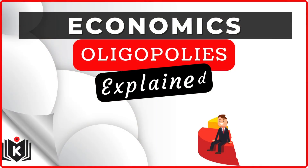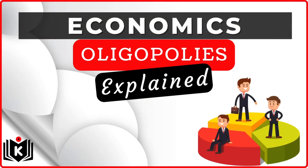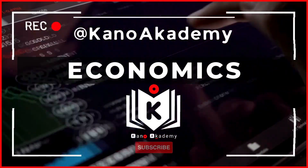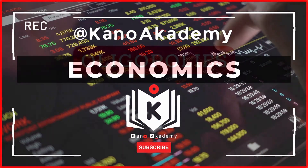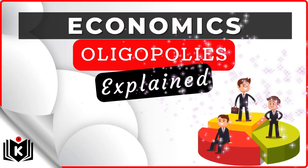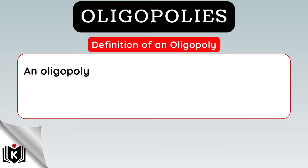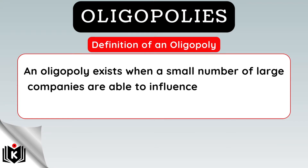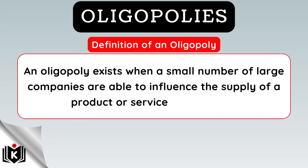Now let's explore this topic of oligopolies as part of the subject of economics. Let's first explain what an oligopoly is. An oligopoly exists when a small number of large companies are able to influence the supply of a product or service to a market.